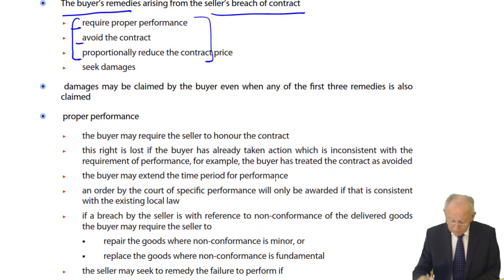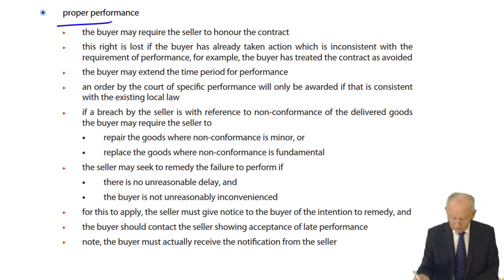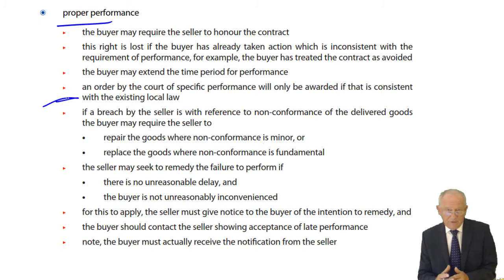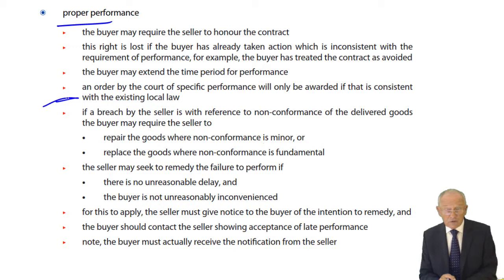We're looking first at proper performance. The initial situation — these first four points — is where the buyer may require the seller to perform the contract. The seller is saying, I don't want to go ahead, I'm not interested anymore in sending you these goods. The buyer says, but we're in a contract, so you have to go ahead. But the price has risen since we entered the contract, says the seller. So I'm not going to sell them to you at $2 each when the current market price is $3 each. The buyer says, but that's what we agreed.